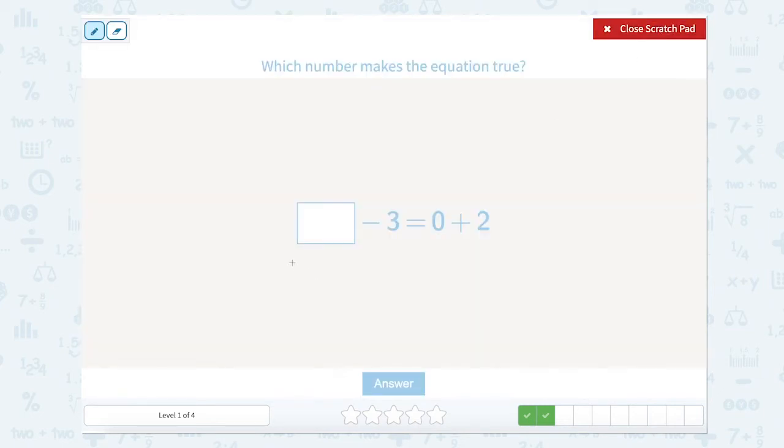Open up that scratch pad again. Remember that this side of the equal sign has to equal this side. So let's solve for the part that has the two pieces. 0 plus 2 equals 2. So 2 equals something minus 3. Something minus 3 equals 2. I can add 3 more to 2 to figure out that number. So 3 plus 2 is 5. So 5 minus 3 equals 2.